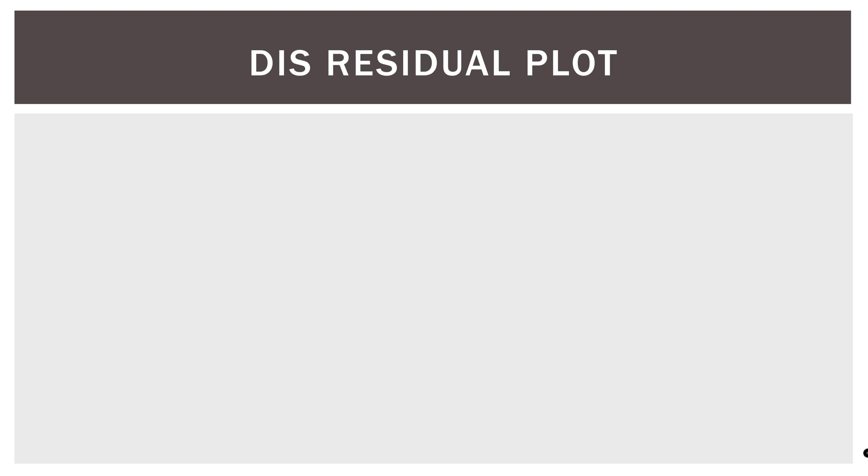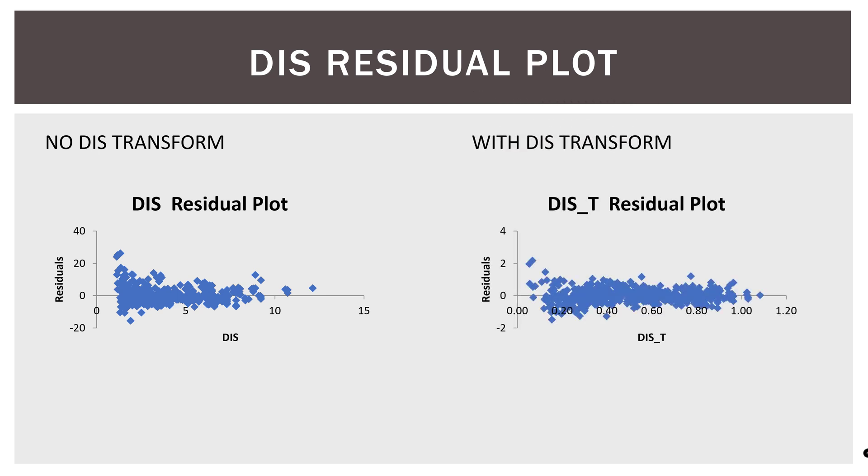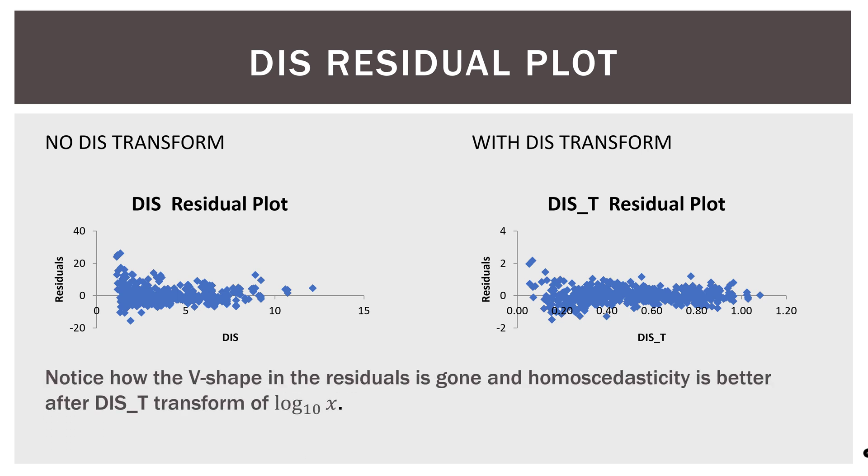So here is the residual plot after doing that logarithmic transformation. So here is without the transform. We can see our residuals are packed over on the left-hand side that kind of have a V shape. And then on the right, we have our residual plot for the transformed. That's what DIS underscore T represents. If I were to do this again, I'd probably name it DIS underscore T underscore log 10, so I knew exactly what I did to that. But since I'm doing this video, I know what it was, but it is good form to maybe put in the redone variable and the transformed variable, exactly what transformation you did. So here we can see that the residual plot is much better. It is spread across the entire range. It's very compact vertically right around the zero mark. And that's exactly what we're looking for.